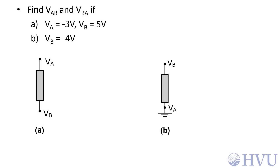In this example, I want to find VAB and VBA for two different cases. In the first case, the voltage at A relative to some reference is equal to negative 3 volts. The voltage at VB relative to the same reference is positive 5 volts.